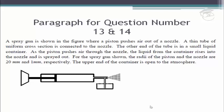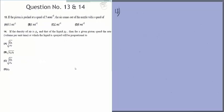Let's move on to the next comprehension type, question 13. We are given a spray gun with a piston which has two areas of cross section of radii 20 mm and 1 mm. The piston is pushed at a speed of 5 mm per second.